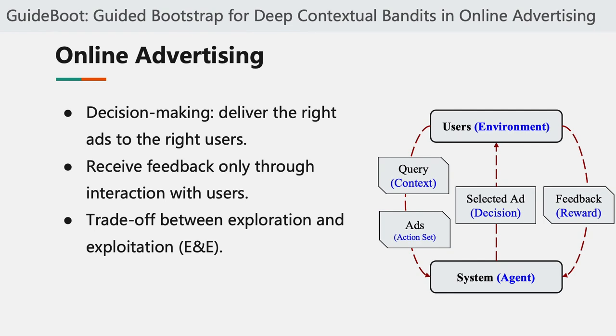To start with, we know that online advertising and recommendation systems have achieved significant success in recent years with the progress of deep learning, for its ability to model complex deep dependencies between users, ads, and contexts. However, on the other hand, online advertising can also be viewed as a massive decision-making problem, which means that the system needs to deliver the right ads to the right users. This is challenging because the system can only receive feedback through interaction with users.